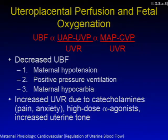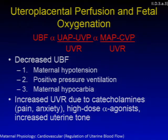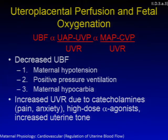Uteroplacental perfusion and fetal oxygenation is determined by this relationship: uterine blood flow is directly proportional to the difference between uterine arterial pressure and uterine venous pressure, divided by the uterine vascular resistance. Decreased uterine blood flow can happen as a result of maternal hypotension, positive pressure ventilation, and maternal hypocarbia.